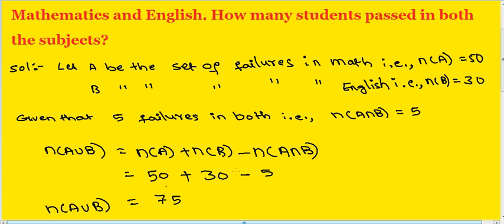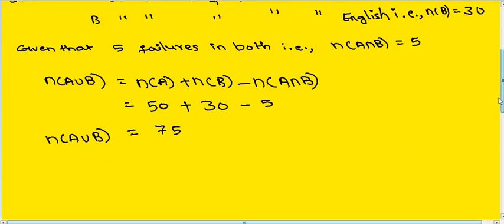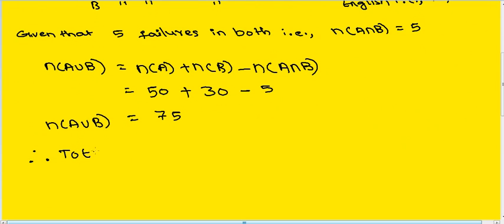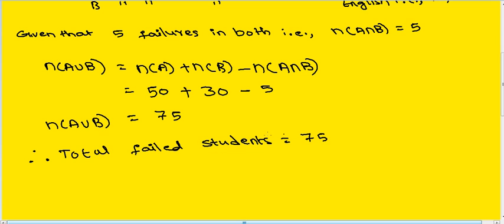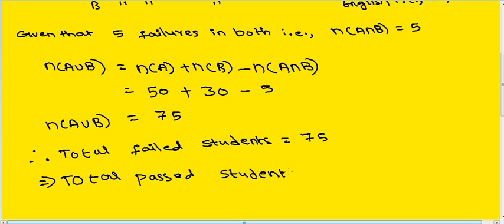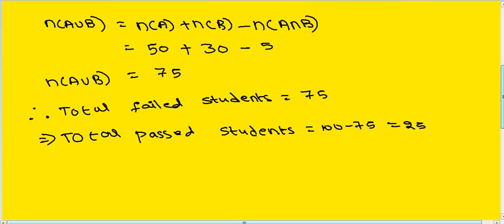Number of A union B equals 75. Therefore, total failed students is 75. Hence, total passed students in this class equals 100 minus 75, that equals 25. Therefore, our answer is 25.